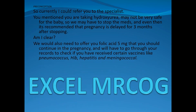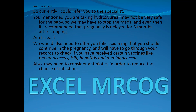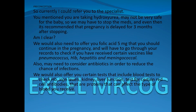We would also need to offer you folic acid 5 mg that you could continue in the pregnancy, and we'll have to go through your records to check if you have received certain vaccines. We usually recommend pneumococcus, haemophilus, hepatitis, and meningococcus. We may also need to consider antibiotics to reduce the chance of infections. We would offer you blood tests to check your haemoglobin, iron levels, kidney and liver function, and test for certain red cell antibodies — proteins that can affect the type of blood you receive. We could also offer tests to check your eyes and an echo for the heart, as these are organs that may be affected by sickle cell anemia.